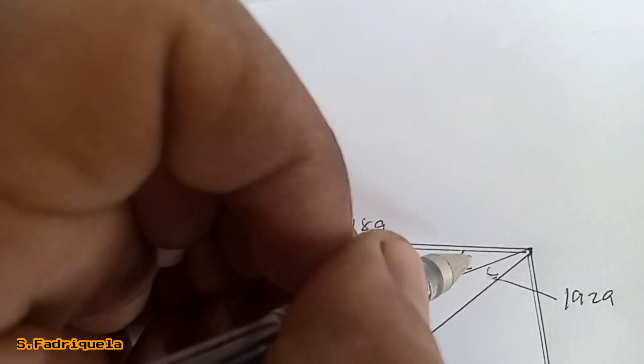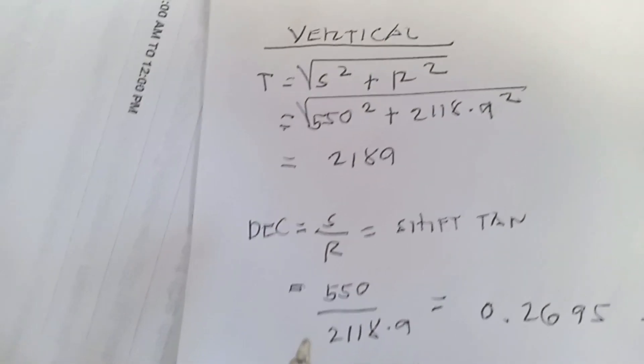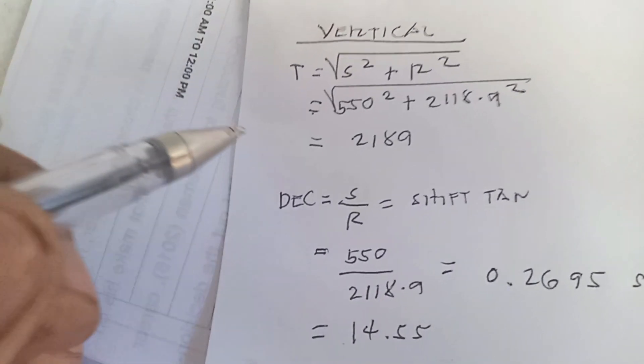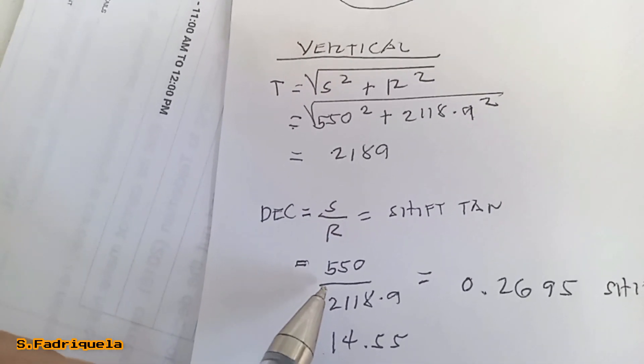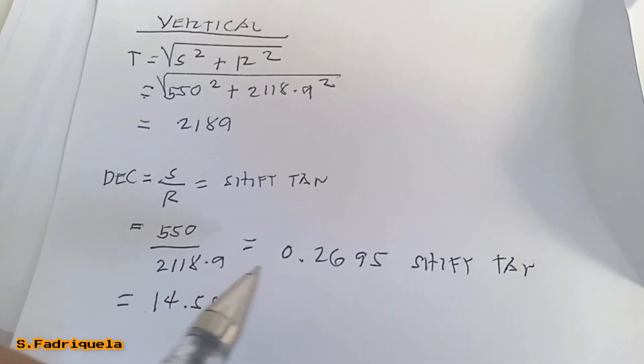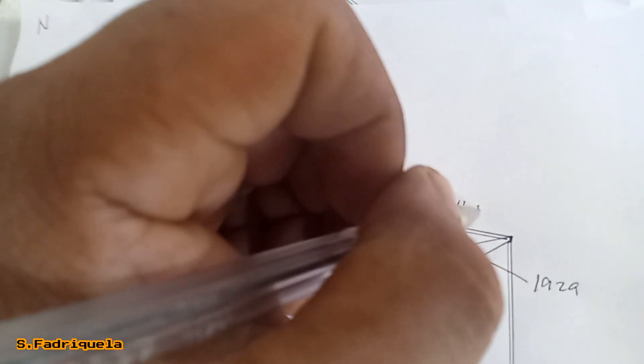Now we get the degree for the vertical offset. The formula is the same: degree = arctan(set ÷ run). We have a set of 550 and a run of 2118.9. So 550 ÷ 2118.9 = 0.2595, then shift tangent gives us 14.55 degrees. So the degree for the vertical offset is 14.55 degrees.